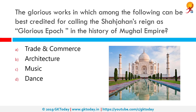Which among the following can be best credited for calling Shah Jahan's reign as a glorious epoch in the history of the Mughal Empire? The correct answer is architecture.